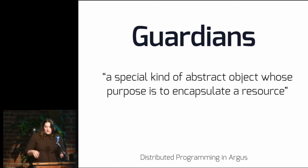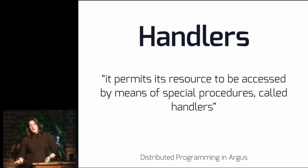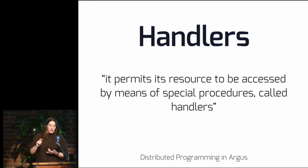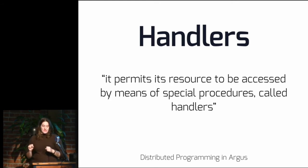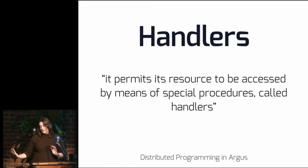Guardians also have handlers — you can think of them like an API. 'It permits its resource to be accessed by means of special procedures called handlers.' Basically APIs — we didn't really have the term APIs at this point, so we're sort of inventing it here. Handlers are accessed via RPC. The important thing about these handlers, even if guardians are running on the same machine, is that guardians can't affect each other's state. All arguments and responses are passed by value to these handlers — you can't modify shared memory and mess each other up. The guardians are totally isolated from each other; the only public access into the state of a guardian is via a handler.